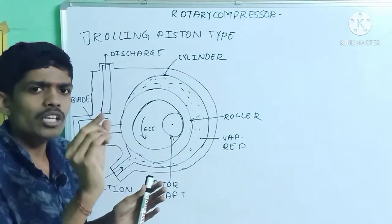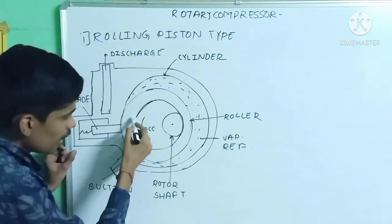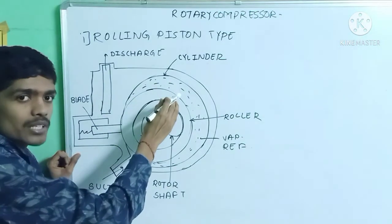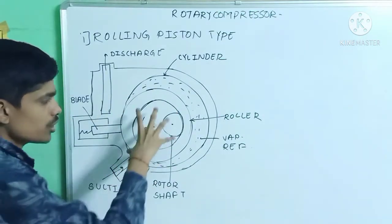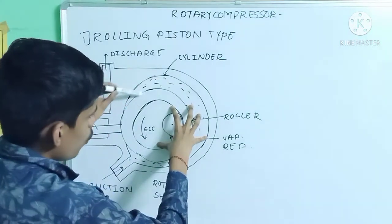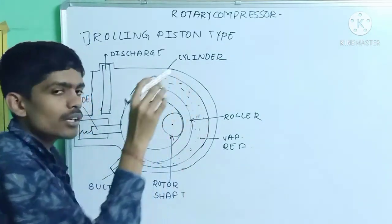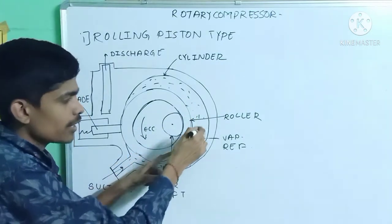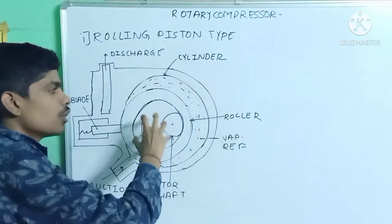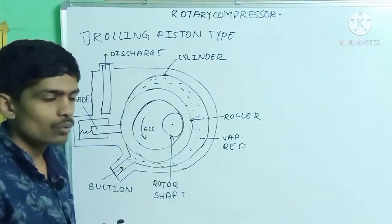The vapor refrigerant gets compressed. When the roller reaches a certain position, the suction port opens and vapor refrigerant enters again from this side. When the roller is at the mid position, this part is completely filled with vapor refrigerant, and whatever compressed vapor refrigerant is on the other side is discharged through the discharge port. When the roller rotates back, suction starts again and the cycle continues.